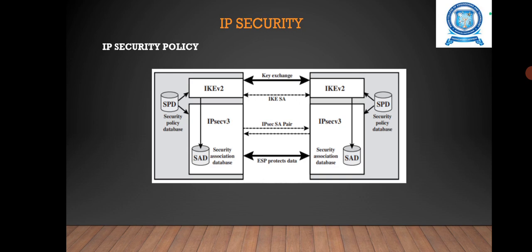Next, we are going to see the IP security policy. In IP security policy, the general concept covers security requirements, definitions, and mechanisms defining the IP security technology. A security association is uniquely identified by three parameters. The Security Parameter Index (SPI) is a bit string assigned to this SA and having local significance only. The SPI is carried in AH and ESP headers to enable the receiving systems to select the SA under which a received packet will be processed. The IP destination address is the address of the destination endpoint of the SA, which may be an end-user system or a network system such as a firewall or router. The Security Protocol Identifier field from the outer IP header indicates whether the association is an AH or ESP security association.